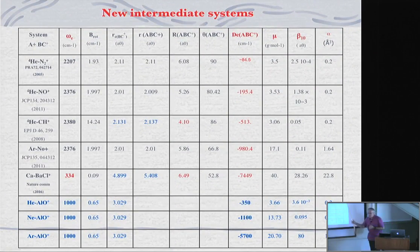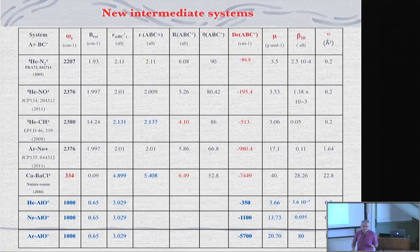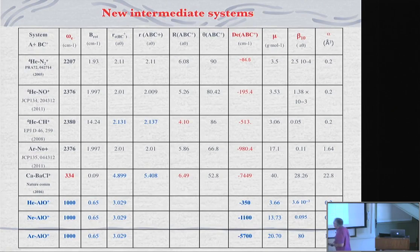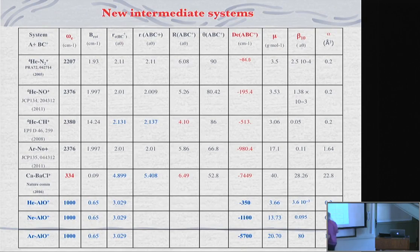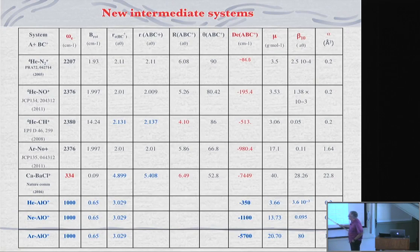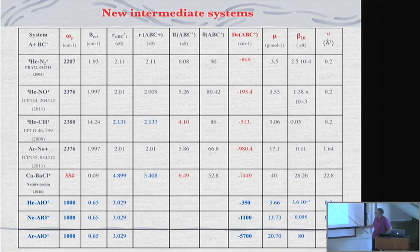That was in 2016. We then decided to test whether it works for other systems, since five systems may not be enough. We chose the ALO class with intermediate vibrational frequency and varied the partner, which allows varying the polarizability, the well depth, and the relative mass. Each time, it is really linked.